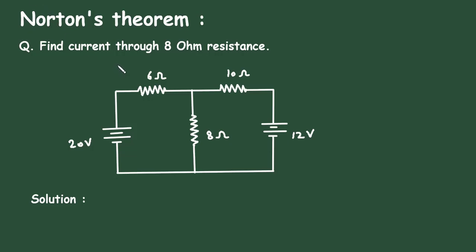To get the free notes of electrical circuits, check the link in the comment section and install the app for free. Norton's theorem question: find current through 8 ohm resistance. Here in this circuit, we have to find the current through this 8 ohm resistance by using Norton's theorem.